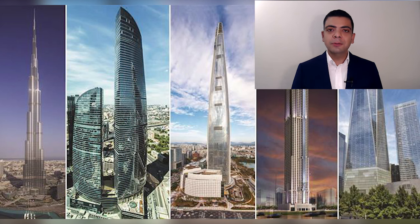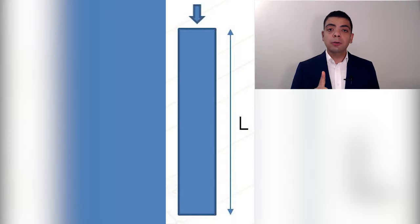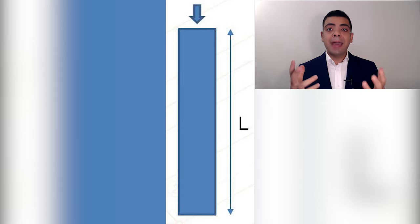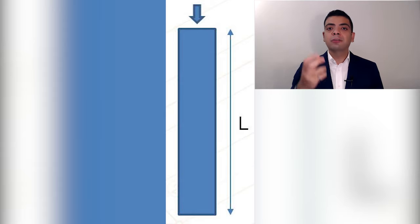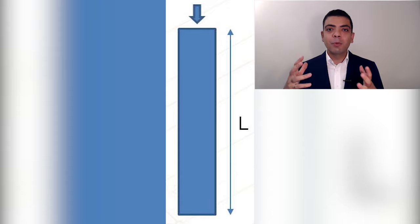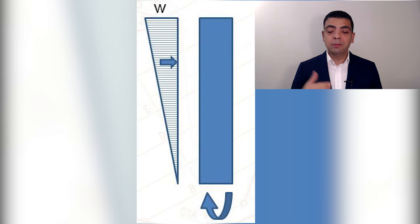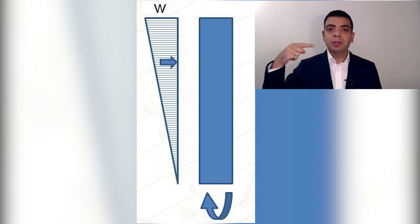I first want to talk about the loads that affect tall buildings. There are two main categories. The first is gravity load, or vertical load — anything with mass in the structure is translated to a vertical load and must be transferred safely to the foundation. This includes the self-weight of the structure, the occupants, and anything with weight inside the building. The second category is lateral load, which includes wind load and seismic load, and they generally affect the building laterally.